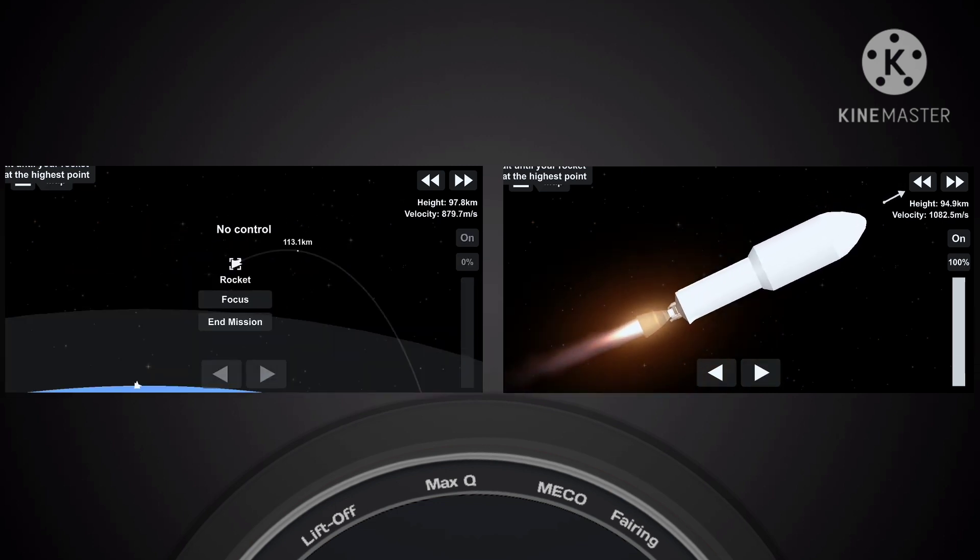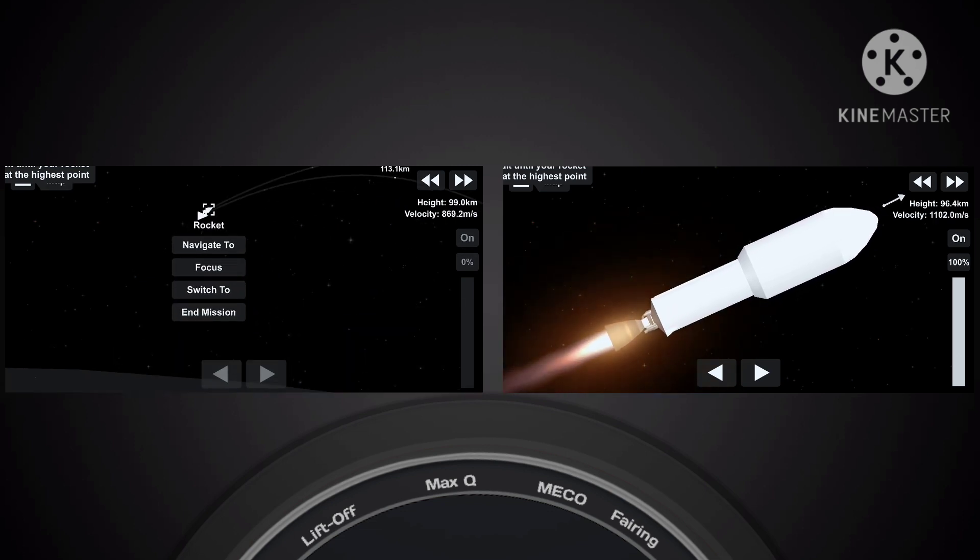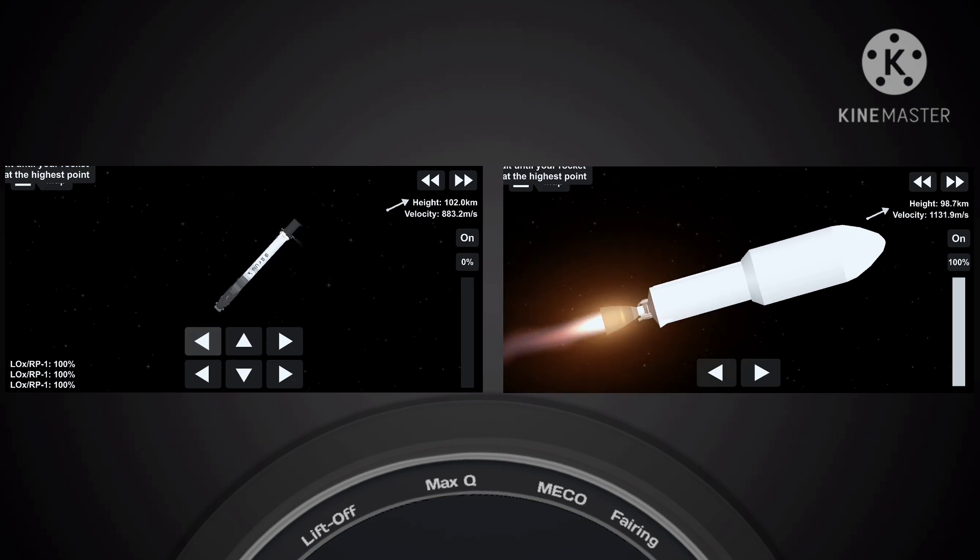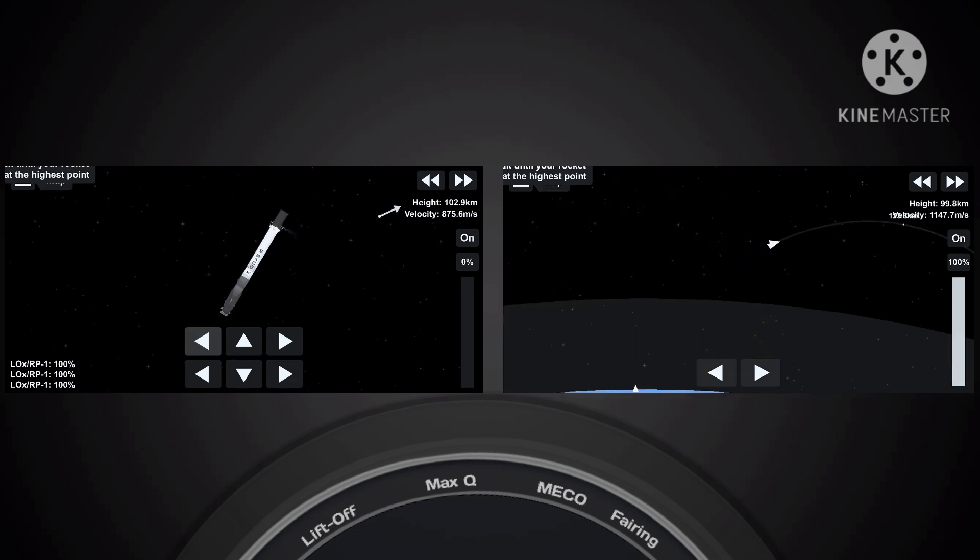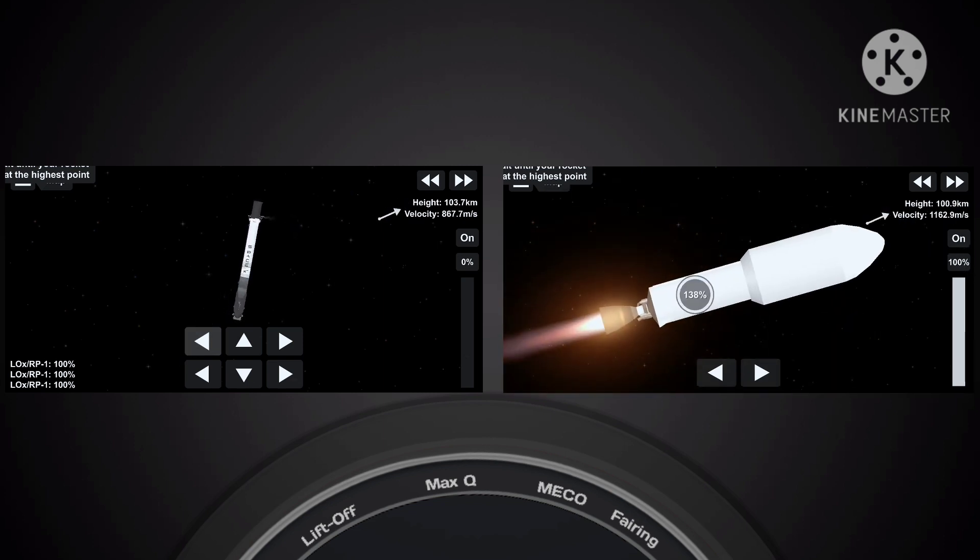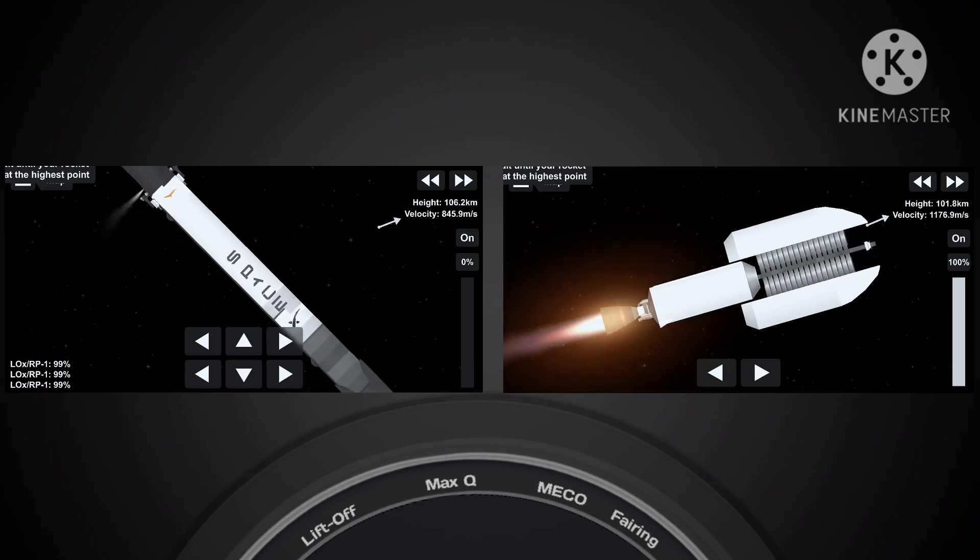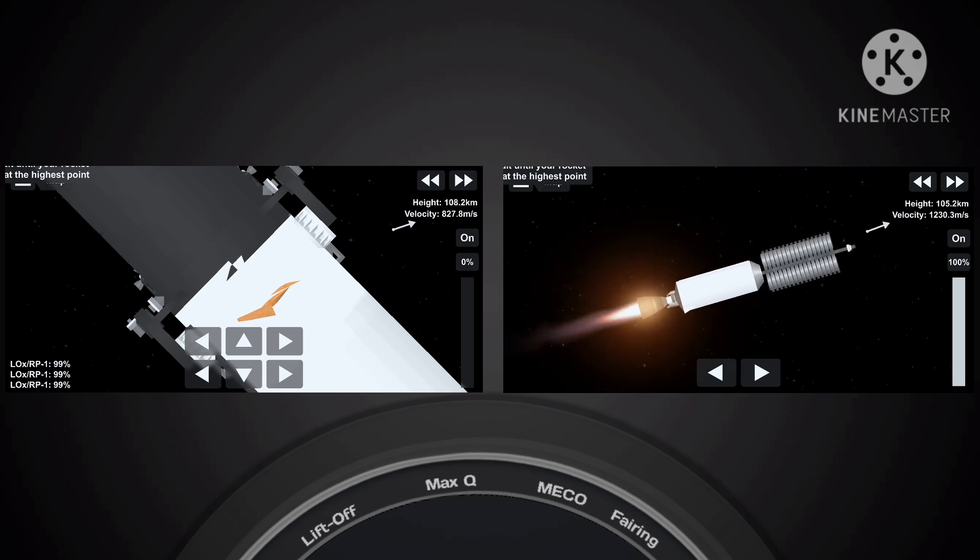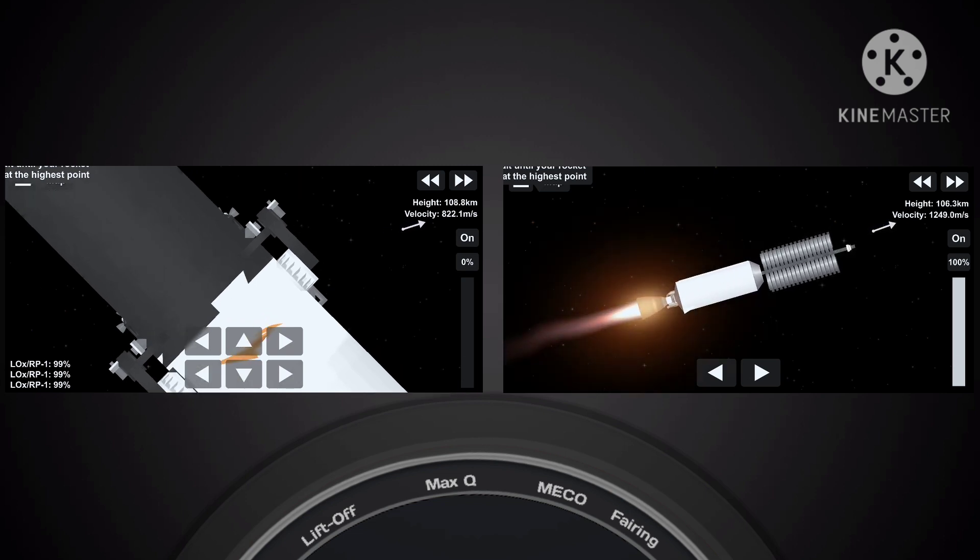We're just about 15 seconds from fairing deploy. On your right-hand screen, you can see a view inside those fairing halves looking at the Starlink payload. On your left-hand screen is first stage making its way back to Earth. Fairing separation confirmed. That is confirmation that those fairing halves have deployed.